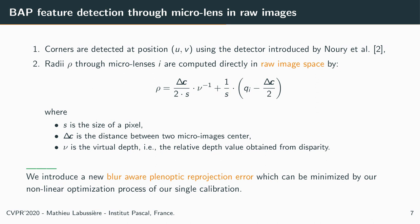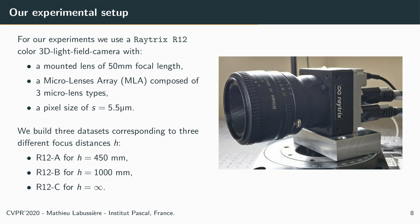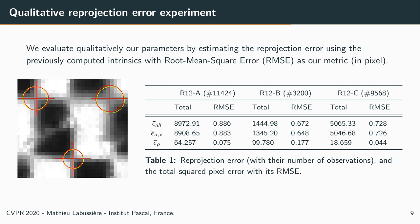To validate our model, we use a Raytrix R12 color 3D light field camera with a mounted lens of 50 mm focal length and an MLA composed of three different micro-lens types. We acquired three datasets corresponding to three different focus distances: R12a, B, and C. When no ground truth is available, we evaluate qualitatively by estimating the reprojection error using previously computed intrinsics, with RMSE as our metric. The table shows a reprojection error of less than one pixel for all datasets, meaning our model is in agreement with reality, as illustrated by the figure on the left.